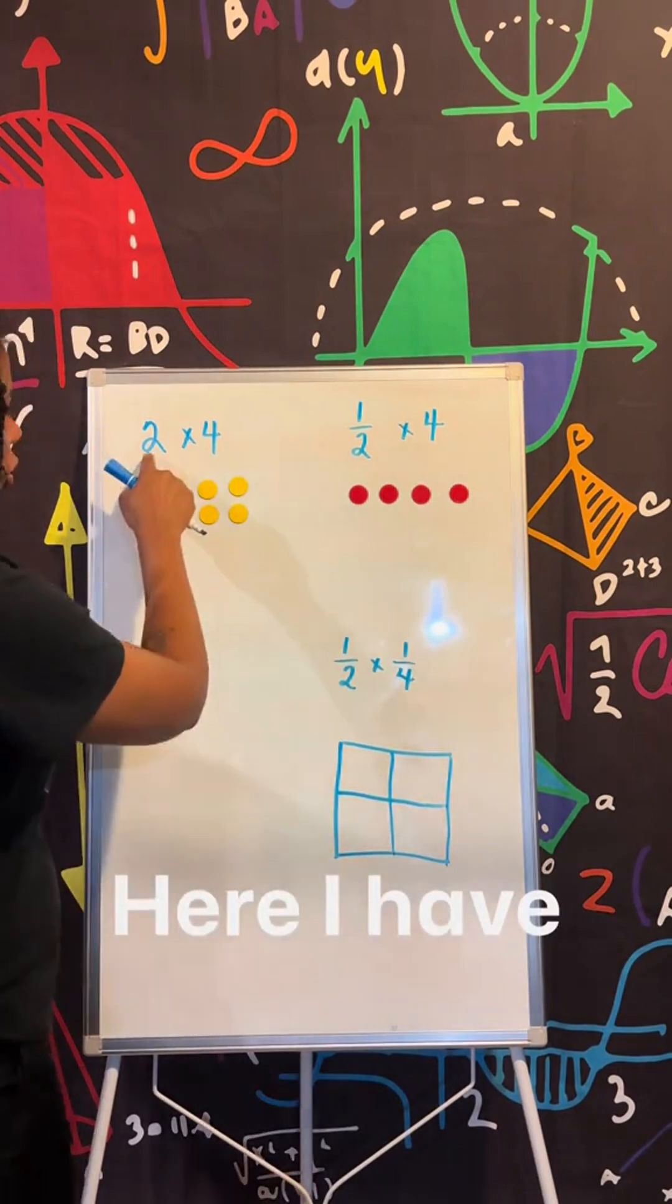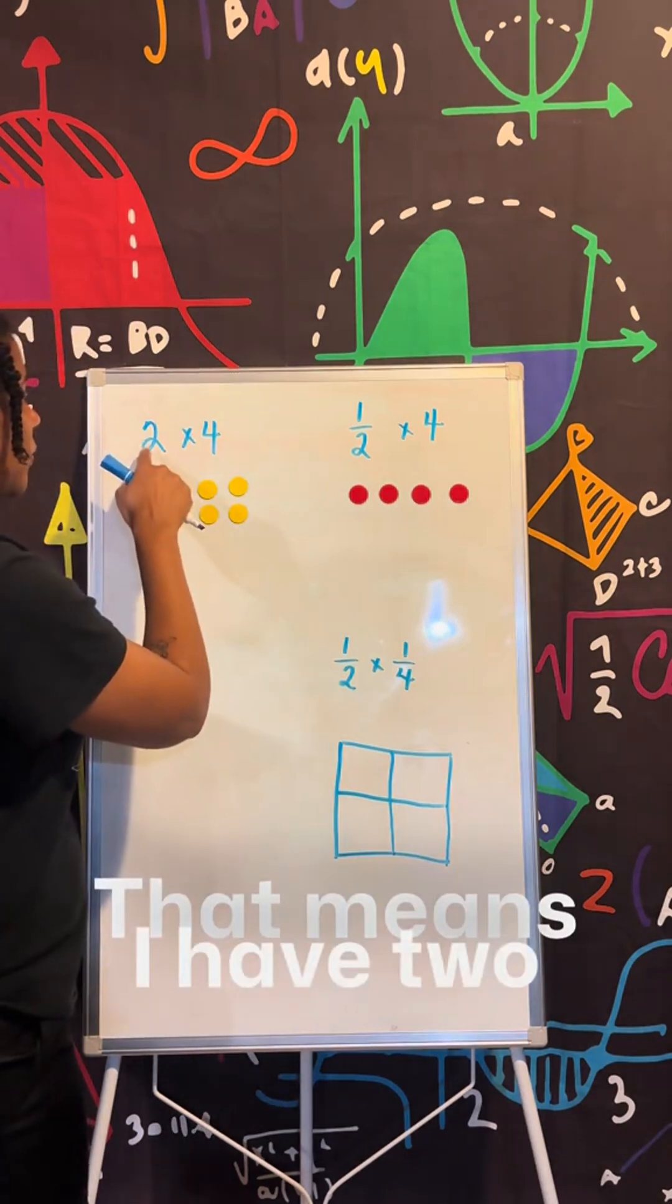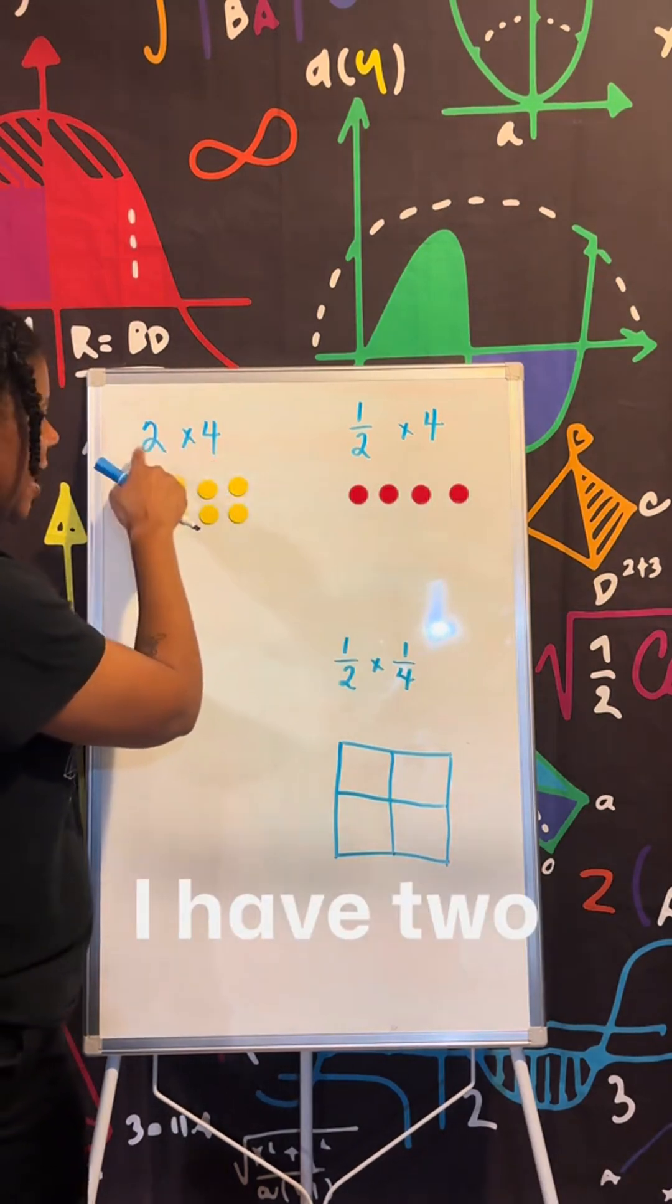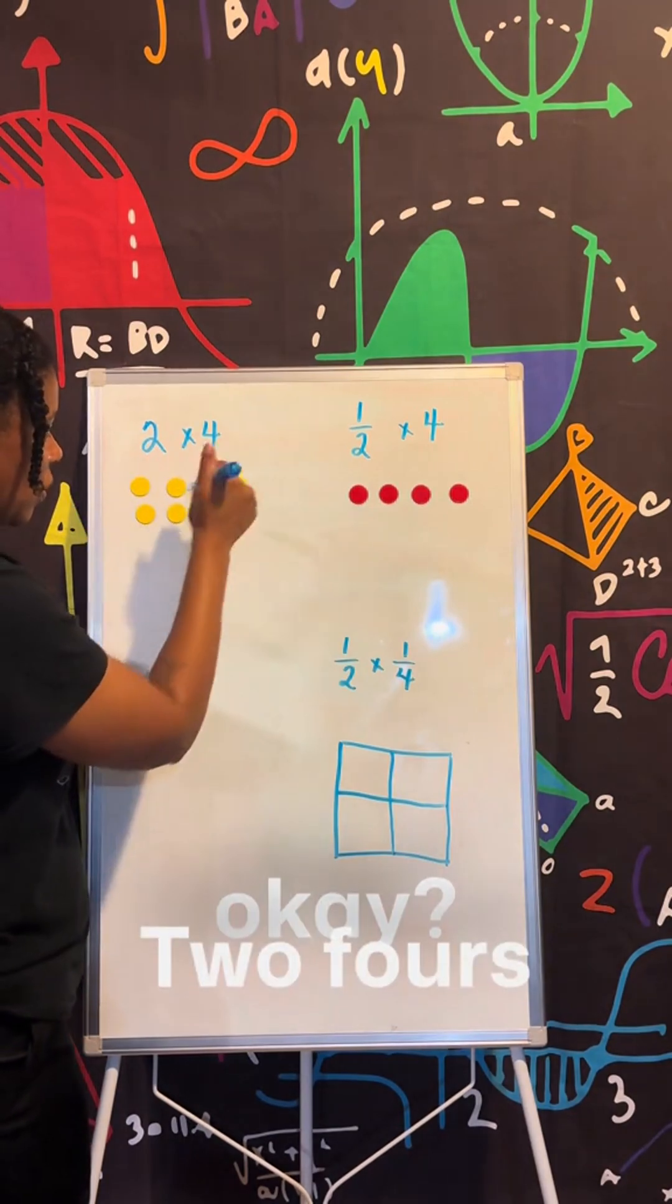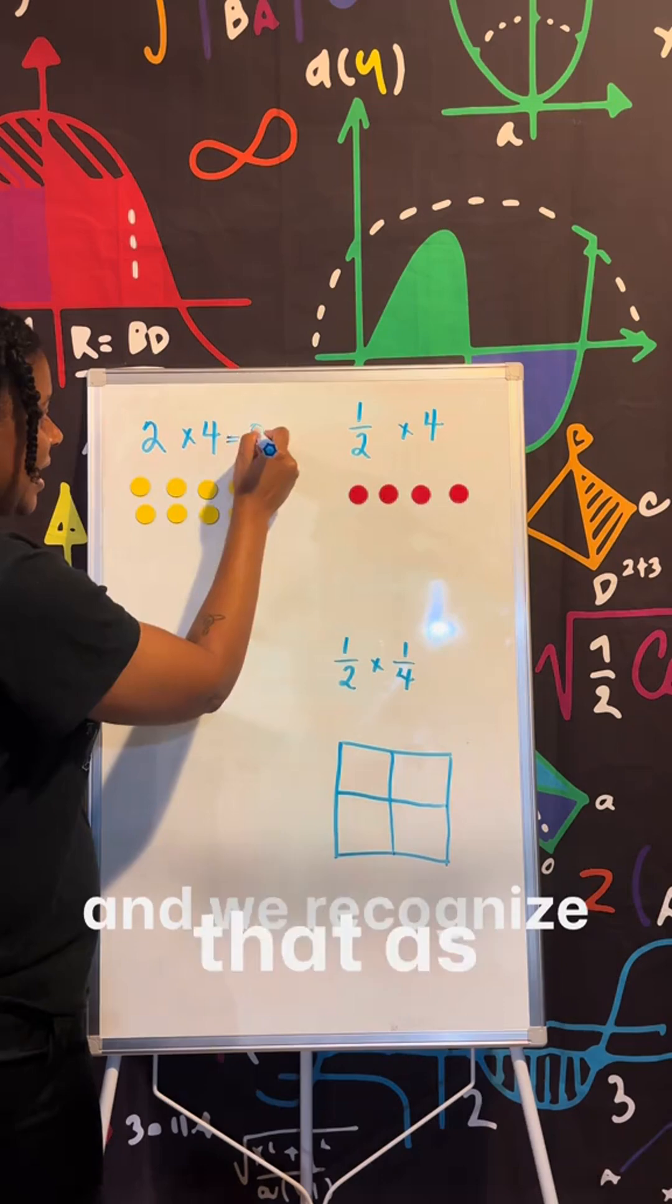Here I have two times four. That means I have two of these. I have two fours, OK, two fours. And we recognize that as eight.